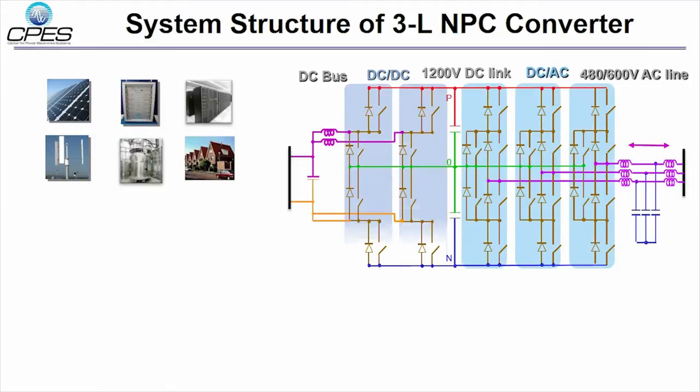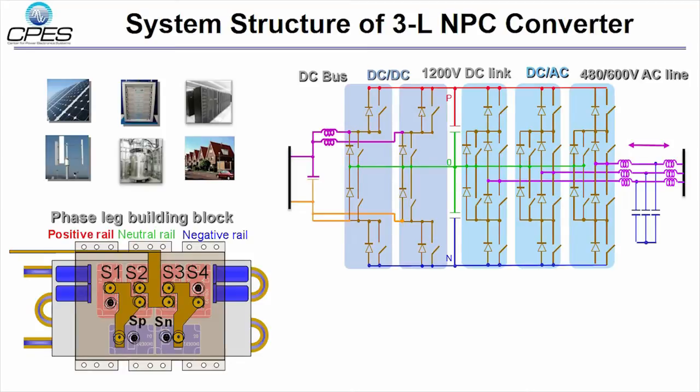Both of these two stages are constructed by this modularized phase-leg building block. The system has 200 kVA power rating and 20 kHz switching frequency with bidirectional power flow.